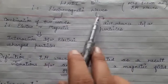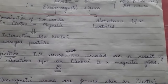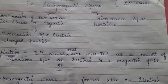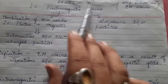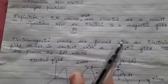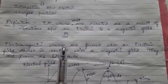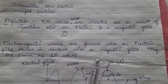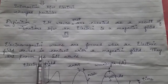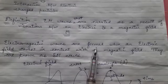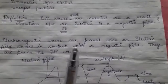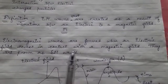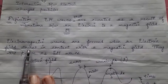This is our fifth unit. Electromagnetic waves, or EM waves, are created when there are vibrations in the electric and magnetic field. The definition is: electromagnetic waves are formed when an electric field comes in contact with the magnetic field.